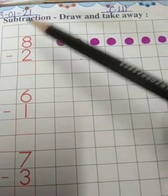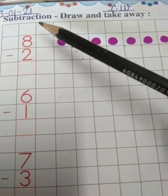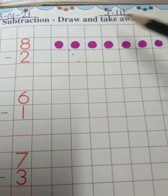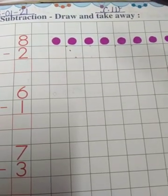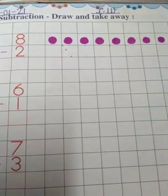Kids, in this page you have to subtract through draw and take away. You have to draw and take away, which means remove some pictures.